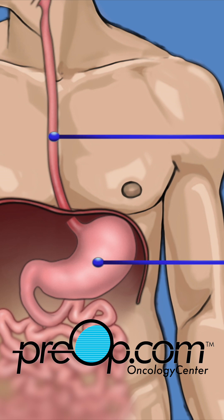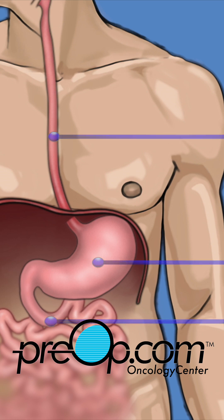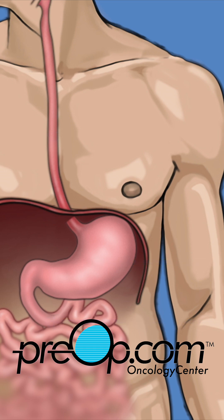In the stomach, pieces of food are broken down further. These partially digested bits then pass to the duodenum, which is the first part of the small intestine. Together, these structures are considered the upper GI tract.